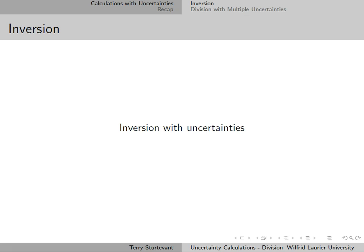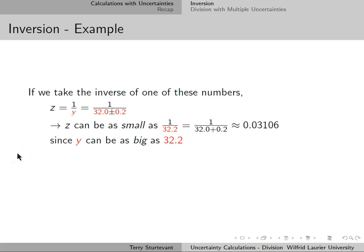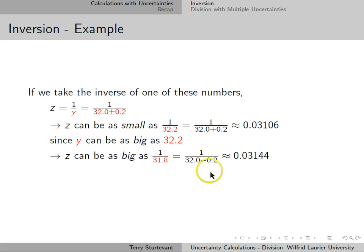Inversion is just taking 1 over a number. So if we take the inverse of one of these numbers, for instance 1 over 32 ± 0.2, then z can be as small as 1/32.2, since 32.2 is the biggest value we can have in the denominator, and the biggest value for z is 1/31.8, which is the smallest value we can have in the denominator.